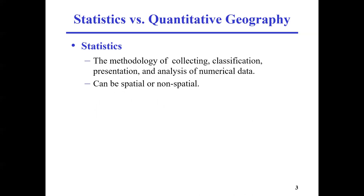If you are a student in biology, you will use statistics, but without a spatial context. But in geography, whether you are majoring in GIS or simply geography, geography is about space. It's about all those entities with a spatial context, which means that as long as it's geography, the object has a position or a location within a specific space. So when we're talking about statistics in geography, there is always a spatial context.